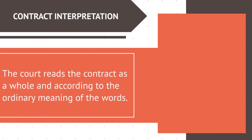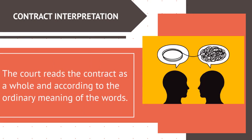The court reads the contract as a whole and according to the ordinary meaning of the words. Generally, the meaning of a contract is determined by looking at the intentions of the parties at the time of the contract's creation. When the intention of the parties is unclear, courts look to any custom and usage in a particular business and in a particular locale that might help determine the intention. For oral contracts, courts may determine the intention of the parties by considering the circumstances of the contract's formation, as well as the course of dealing between the parties.